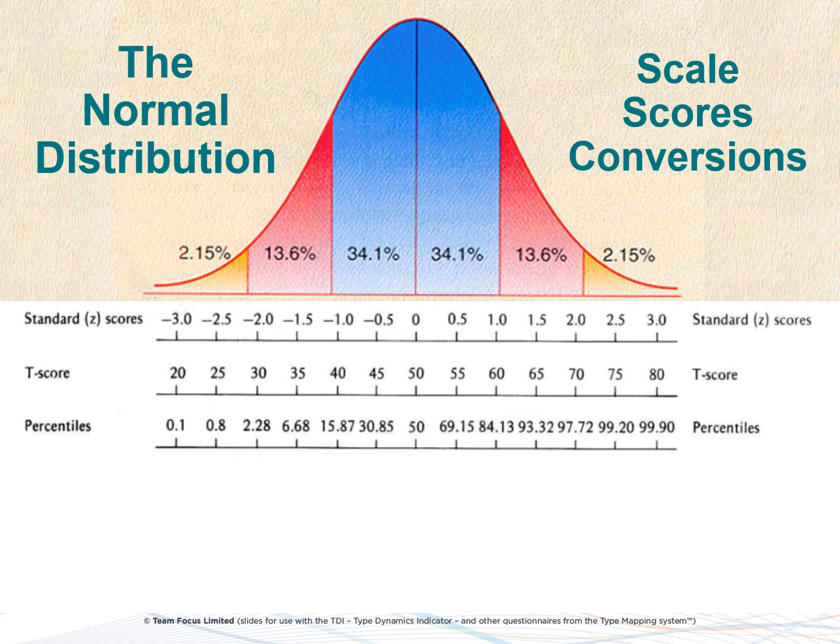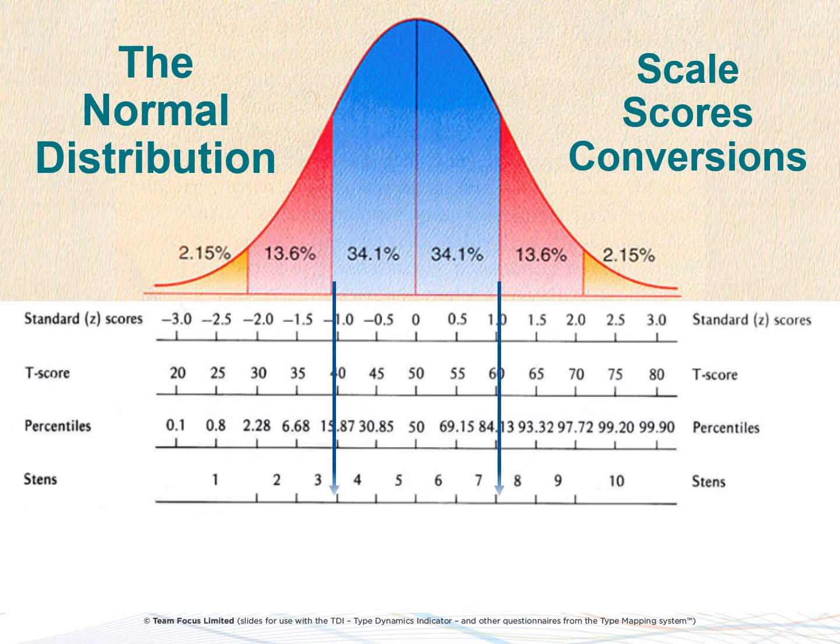In personality measurement, one of the most common scales used is the standard 10, or Sten scale. And if you look at it, you will see that the majority of people score between 4 and 7.